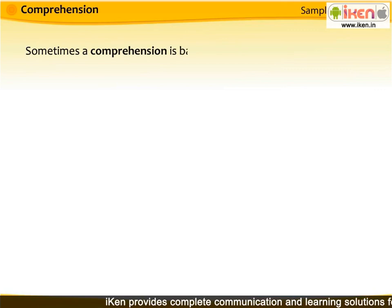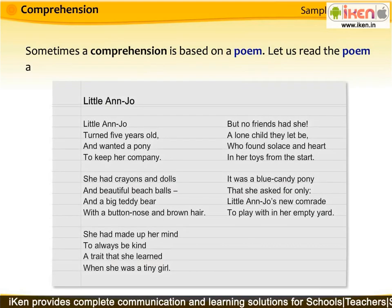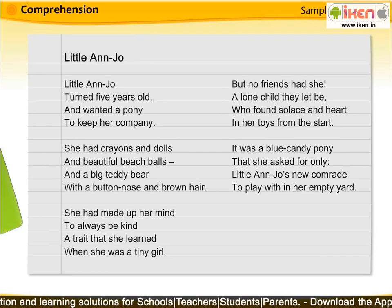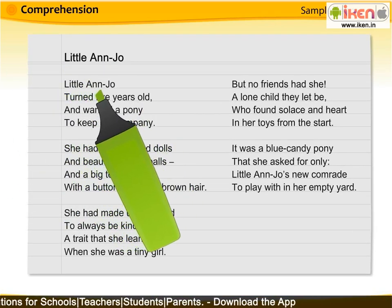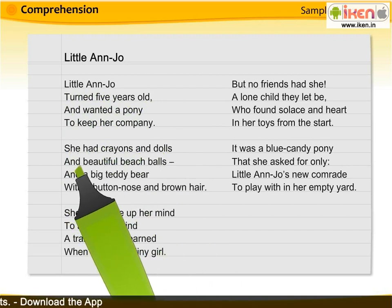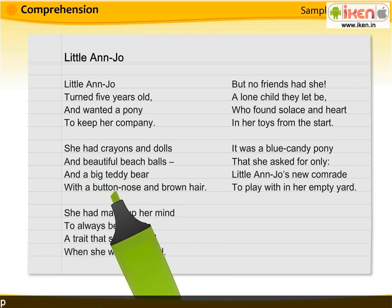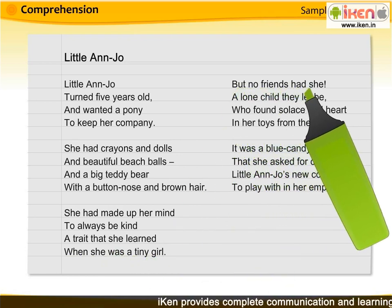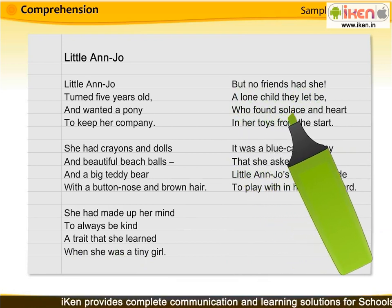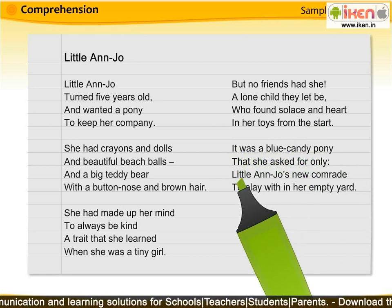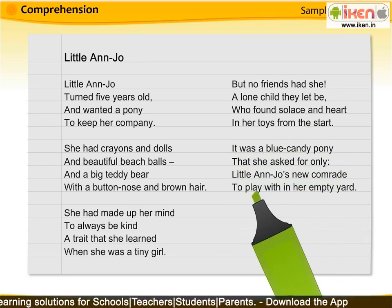Sometimes a comprehension is based on a poem. Let us read the poem given below and try to understand the theme or subject of the poem. Little Ann Jo turned five years old and wanted a pony to keep her company. She had crayons and dolls and beautiful beach balls and a big teddy bear with a button nose and brown hair. She had made up her mind to always be kind, a trait that she learned when she was a tiny girl. But no friends had she — a lone child they let be, who found solace and heart in her toys from the start. It was a blue candy pony that she asked for only — Little Ann Jo's new comrade to play with in her empty yard.